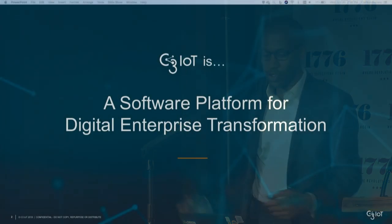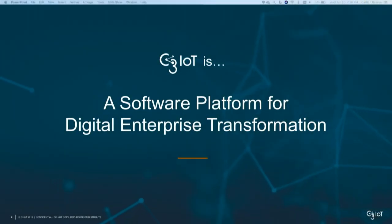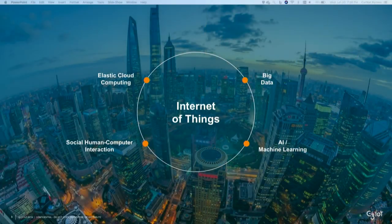C3 IoT is a software platform for the digital enterprise transformation. We look at this around four vectors that are influencing how organizations are thinking about how they're going to build, design, develop, and deploy AI and IoT applications. Those four vectors are: elastic cloud compute, big data, artificial intelligence and machine learning, and natural language processing or social and human-computer interaction.